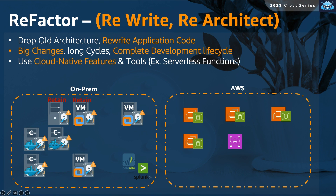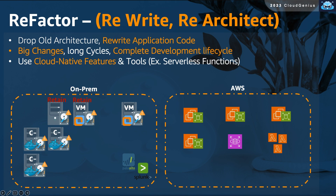The next strategy is refactor, which is sometimes called rewrite or re-architect. With this strategy, you decide to completely eliminate and drop the old application architecture that was running on-premises and rewrite the whole application from scratch, changing it to rely on cloud-native capabilities and features. This is more complex than the previous strategies and usually takes a longer time. We would prefer to postpone refactoring and modernization efforts to post-migration, unless it is a must-do during migration — for example, when customers have legacy architectures with obsolete components that mandate a refactoring strategy. A typical example is decomposing your application and replacing it with a group of Lambda functions, adopting a serverless architecture.